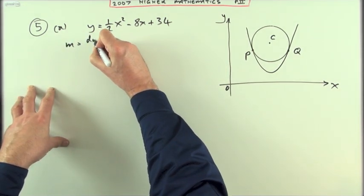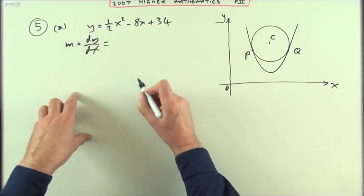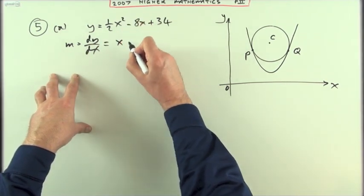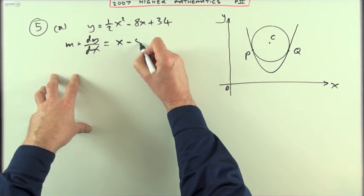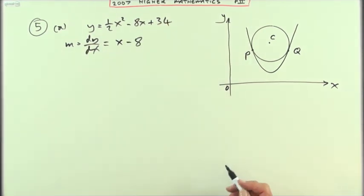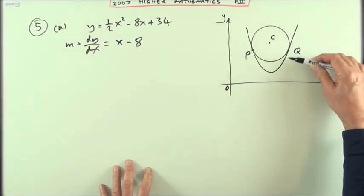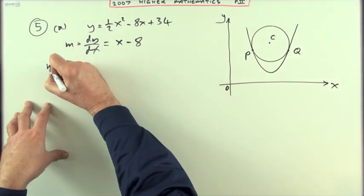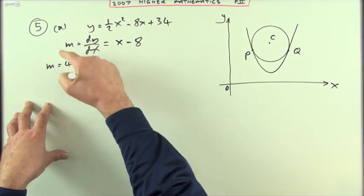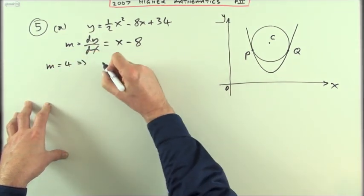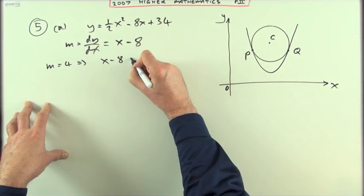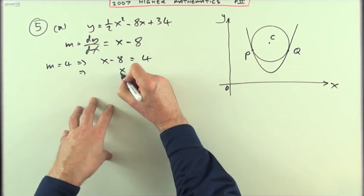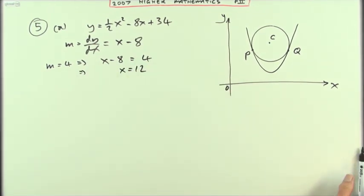To get the gradient, differentiate: multiply by the power — two halves are one, so the x² term becomes just x. The linear term goes down to eight. So the derivative is x minus eight. If the gradient of the tangent is four, I can make a statement: x minus eight equals four. Take the eight across — straight away, x is 12.